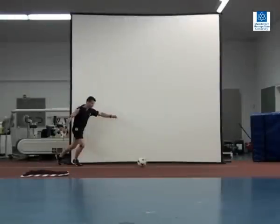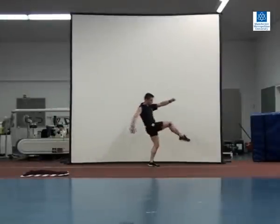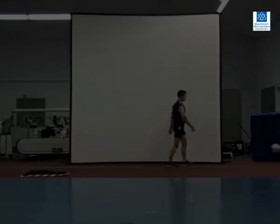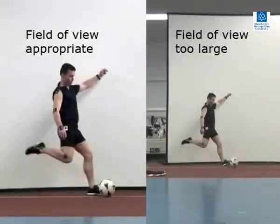This example shows a well focused image but with too large a field of view. Comparing the two fields of view highlights how difficult it would be to accurately locate the joint centers in the image on the right.